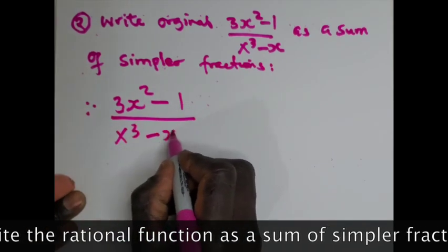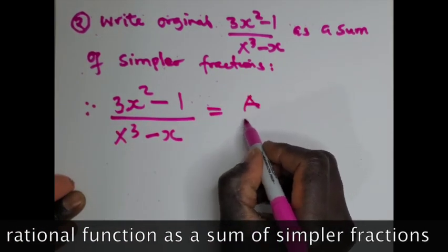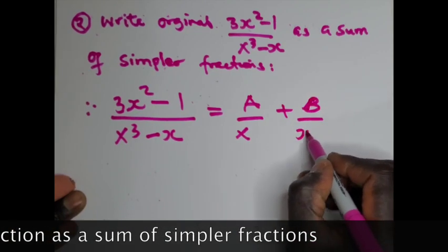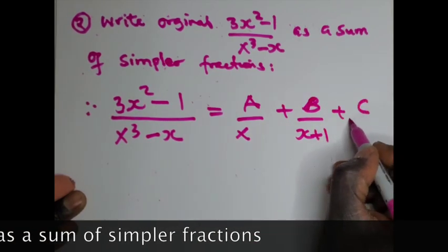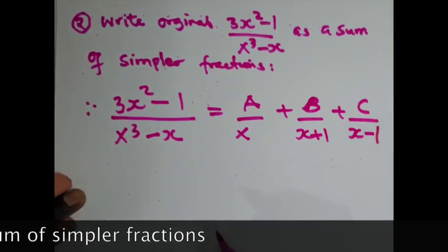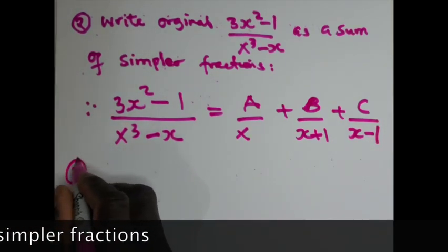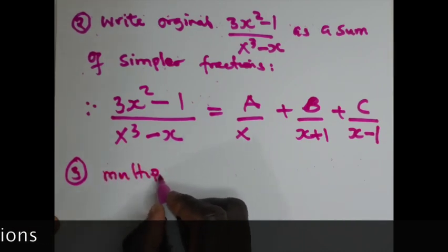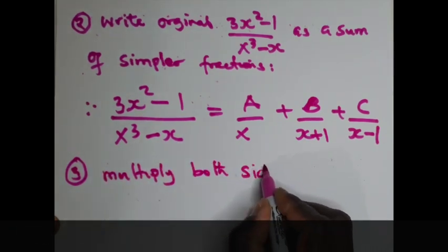Now you're going to introduce some constants because we want to put it in simplest form: A over x, B over x+1, plus C over x-1. Step three: multiply both sides by the denominator.